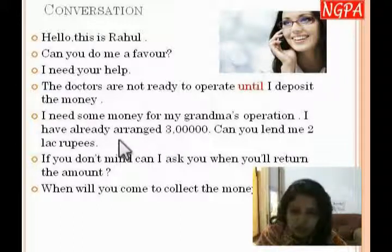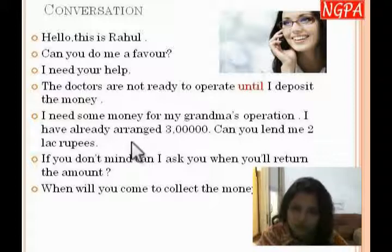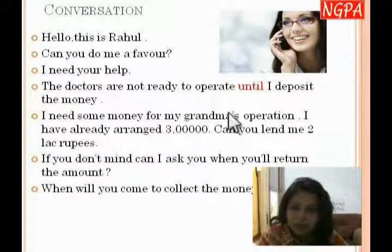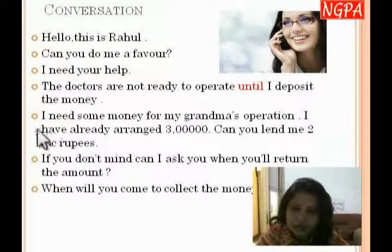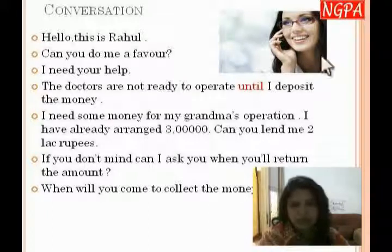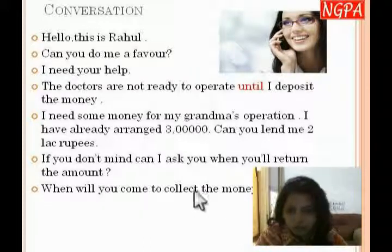'I have already arranged...' — here we use present perfect for what you have already done. 'I have hospitalized my grandpa,' 'I have arranged three lakh rupees.' Then you ask: 'Can you lend me two lakh rupees?' The amount can vary according to your situation. Use present perfect whenever you want to say something you have already completed.